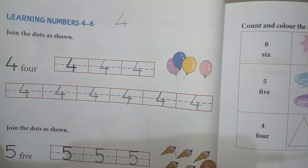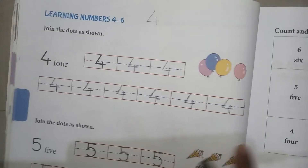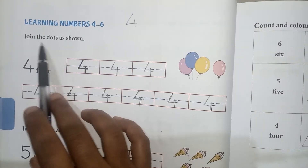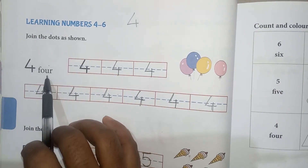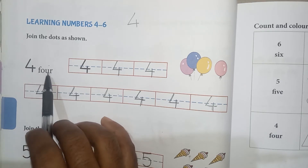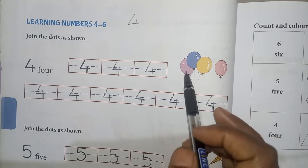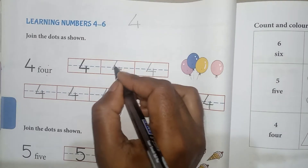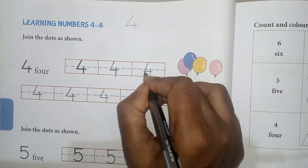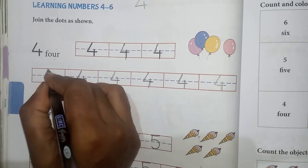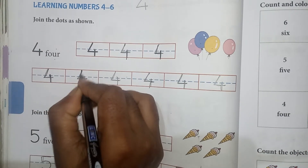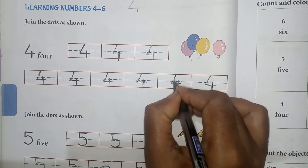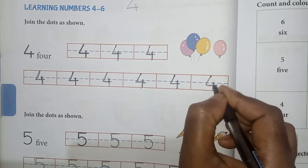Now we are going to understand numbers 4 to 6. Learning numbers 4 to 6. Join the dots as shown. Which number is it? 4 — F, O, U, R. How many volumes are there? 4: 1, 2, 3 and 4. So let's write number 4. 4, 4, 4, 4, 4, 4, 4, 4.